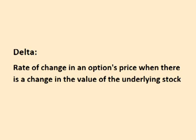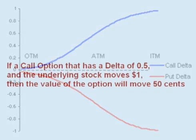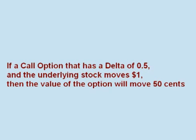Delta is the rate of change in an option's price when there is a change in the value of the underlying stock. Call options have positive delta between 0 and 1. Put options have a negative delta between 0 and negative 1. When a stock changes price $1, one can think of the delta as the percentage of $1 that the option will change in value. For instance, if a call option has a delta of 0.5 and the underlying stock moves $1, then the value of the option will move $0.50.